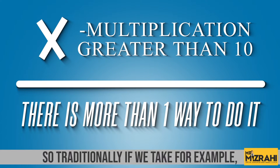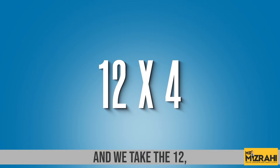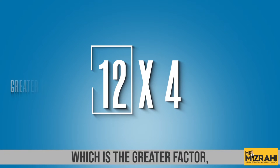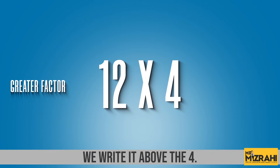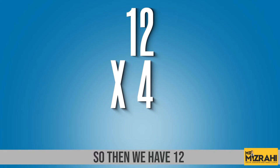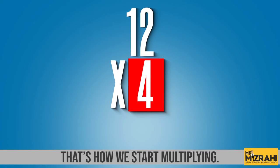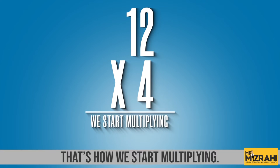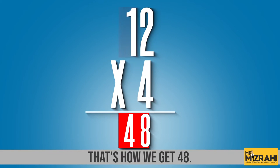So traditionally, if we take for example 12 times 4, we take the 12, which is the greater factor, and we write it above the 4. So we have 12 and then under it we have the 4, and that's how we start multiplying. We multiply 4 by 2 and then 4 by 1, and that's how we get 48.